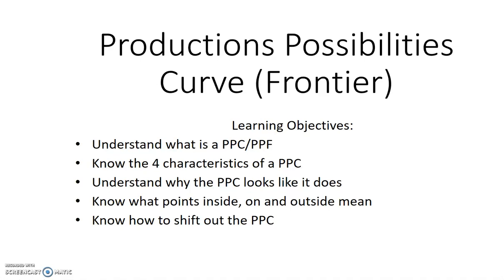This screencast is on the Production Possibility Curve, also known as the Production Possibility Frontier. We're going to understand what a PPC is, look at its four characteristics, understand why it looks like it does, look at points inside, on, and outside and discuss what each means, and lastly talk about how to shift out the PPC.